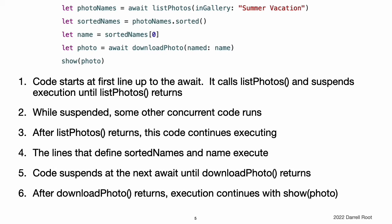That code also runs until the next suspension point marked by await, or until it completes. After listPhotosInGallery returns, this code continues execution starting at that point. It assigns the value that was returned to photoNames. The lines that define sortedNames and name are regular synchronous code. Because nothing is marked await on these lines, there are not any possible suspension points. The next await marks the call to the downloadPhotoNamed function. This code pauses execution again until that function returns, giving other concurrent code an opportunity to run. After downloadPhotoNamed returns, its return value is assigned a photo and then passed as an argument when calling show.